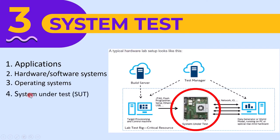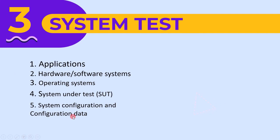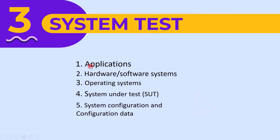The next test object is the system under test — it is very obvious that the system we want to test is a test object. The last one is system configuration and configuration data. Configurations in software are used to enable different features for different variants. To test different variants of the software, these configuration data are required. That is why system configuration and configuration data are test objects of system testing.